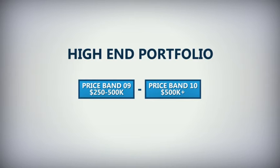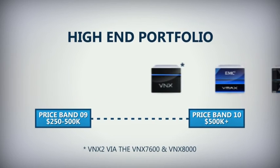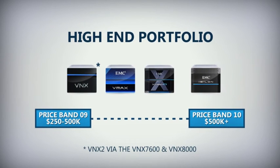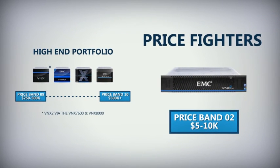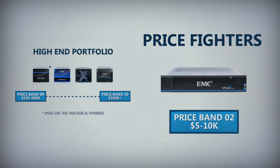At the high end of the market, inclusive of price bands nine through ten, or $250,000 plus, EMC will continue to position VNX2, VMAX, Extreme IO, or Isilon, depending on the customer's requirements. And at the very low end, EMC will continue to offer the very affordable, simple, and feature-rich VNXE1600 block storage array for extremely price-sensitive customers.